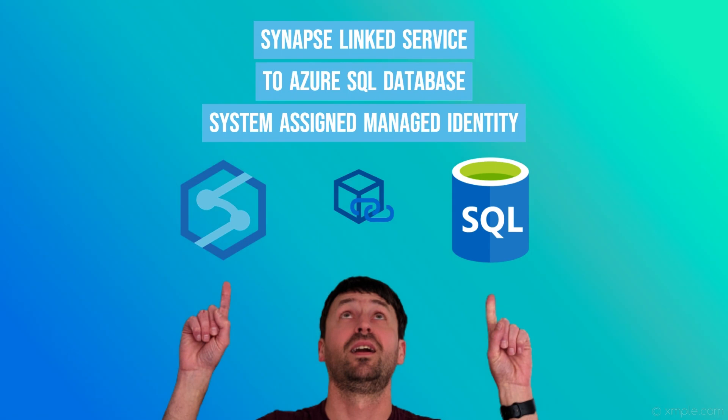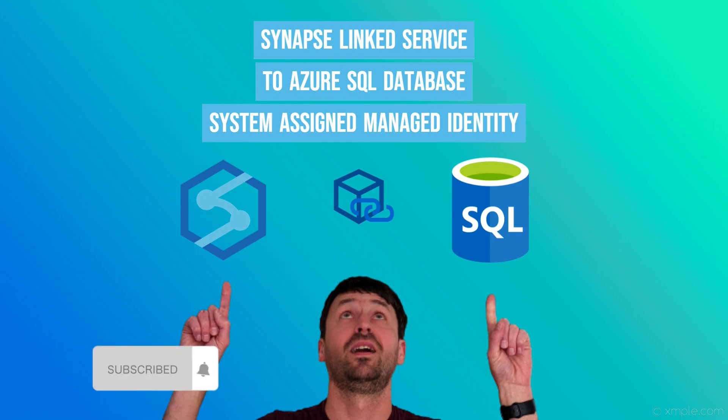And that's it. By following these simple steps, you have created a linked service to the Azure SQL Database using System Assigned Managed Identity as the authentication method. If you have any questions or comments, feel free to leave them in the comment section below. If you enjoyed this video, don't forget to like and subscribe for more tutorials like this. Thanks for watching and see you next time!